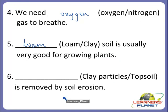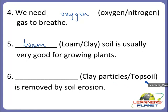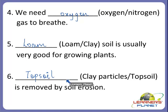Alright, children. Now the next one: dash is removed by soil erosion. What is removed by soil erosion — are they clay particles or topsoil? The removal of the fertile topsoil is called soil erosion. So we can say that topsoil, which is very fertile, is removed by soil erosion.